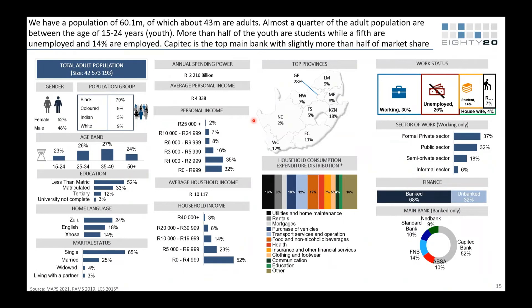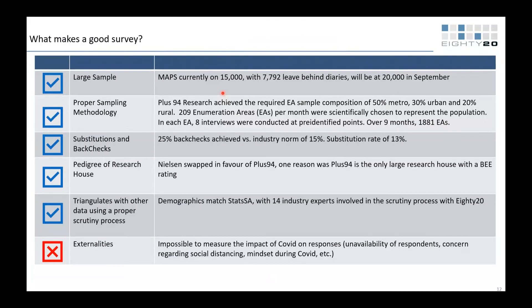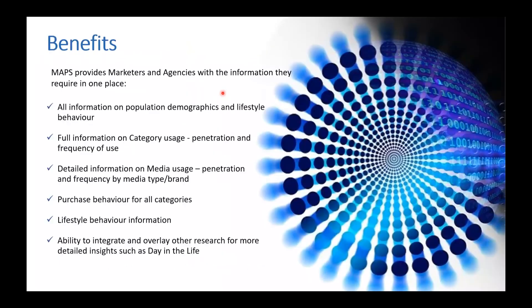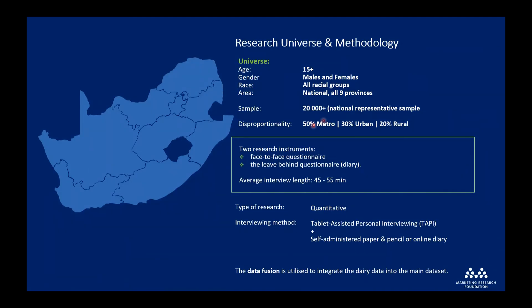I'm looking at the questions queued in the chat. I'll go to Solani. Solani's question: looking at the slide showing sample distribution — 50% from metros, about 20% from rural, 30% from other areas — with Gauteng having three metros, would that not tip the view more towards what's happening in Gauteng more than any other place?